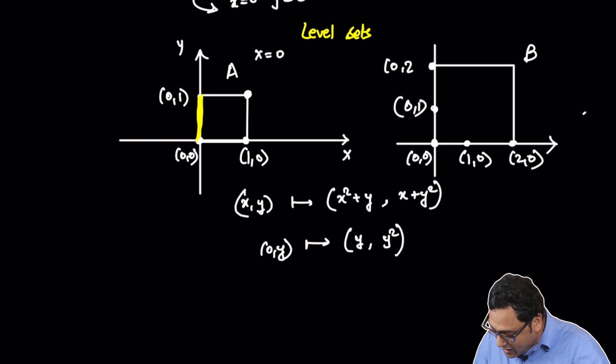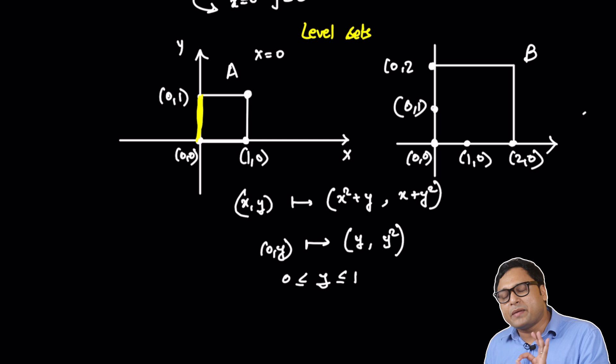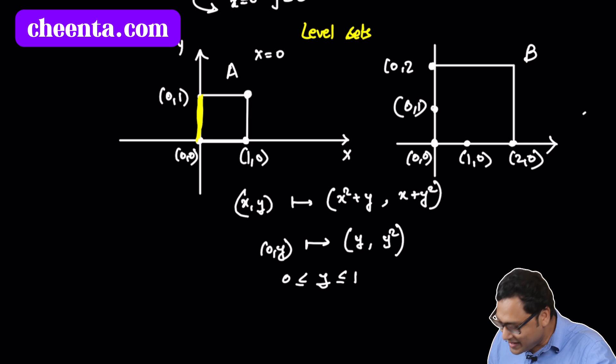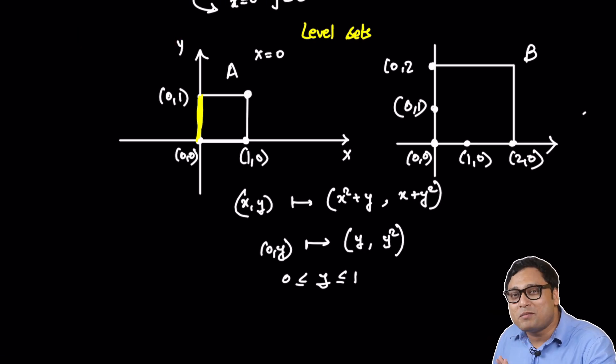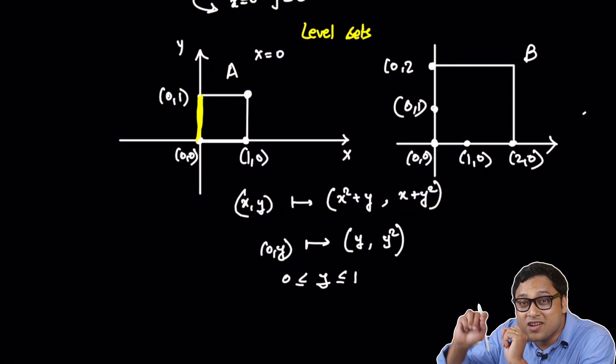That's the co-domain, that's your set B. This is your set A. So I am saying that y is ranging between 0 and 1. What is the picture of y comma y squared? t comma t squared. It's a parabola, right?